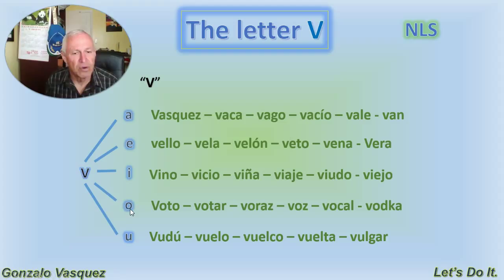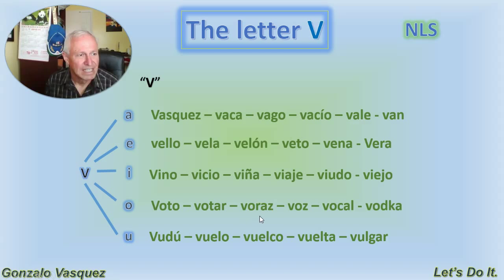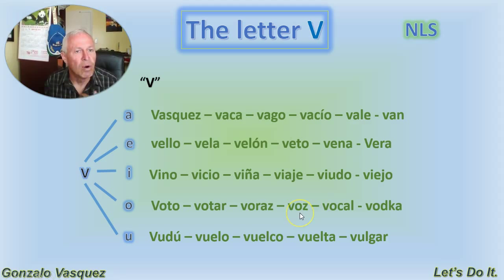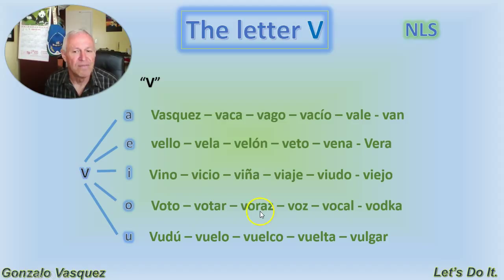La ve con la O will be vo. Voto is when you go to elect Congress or president. Votar is the act of going and doing that. Voraz is like a person who is hungry to do something, really eager. Voz is a voice. Vocal is a vowel. And vodka is a Russian drink — everybody knows vodka. Once again, ve con la O: vo — voto, votar, voraz, voz, vocal, vodka.